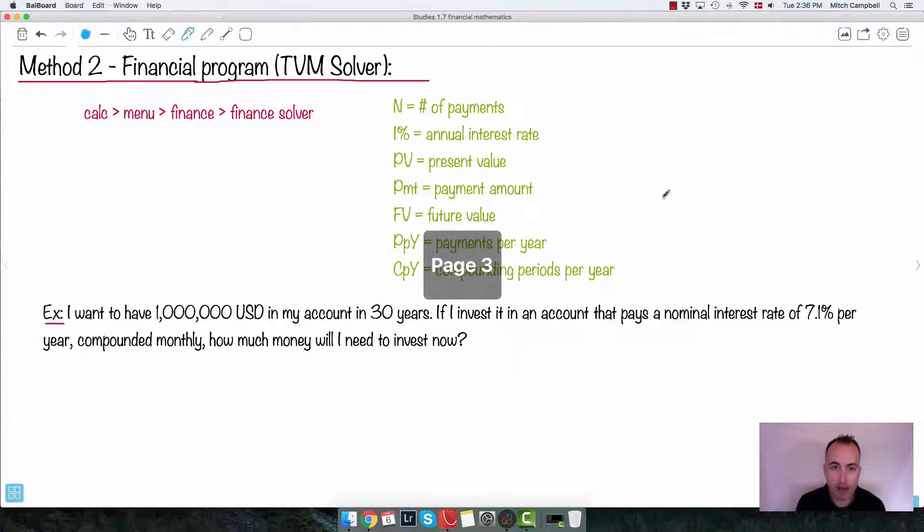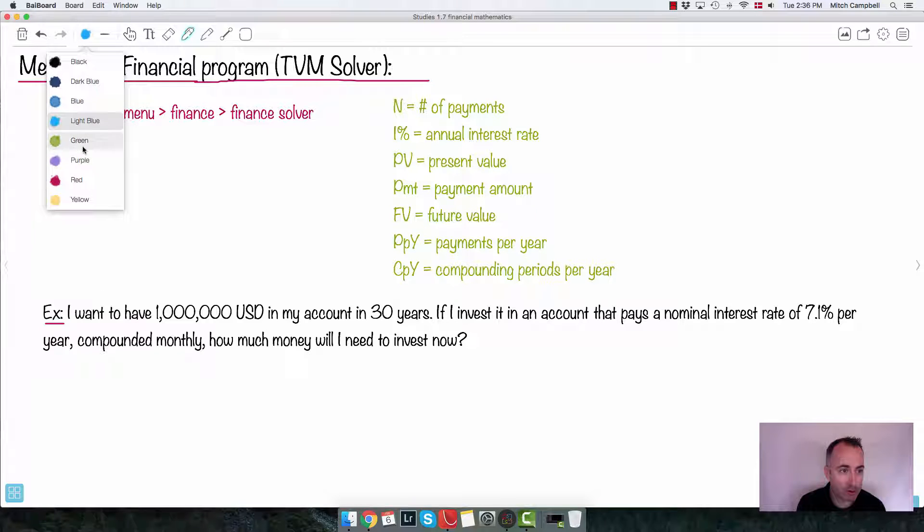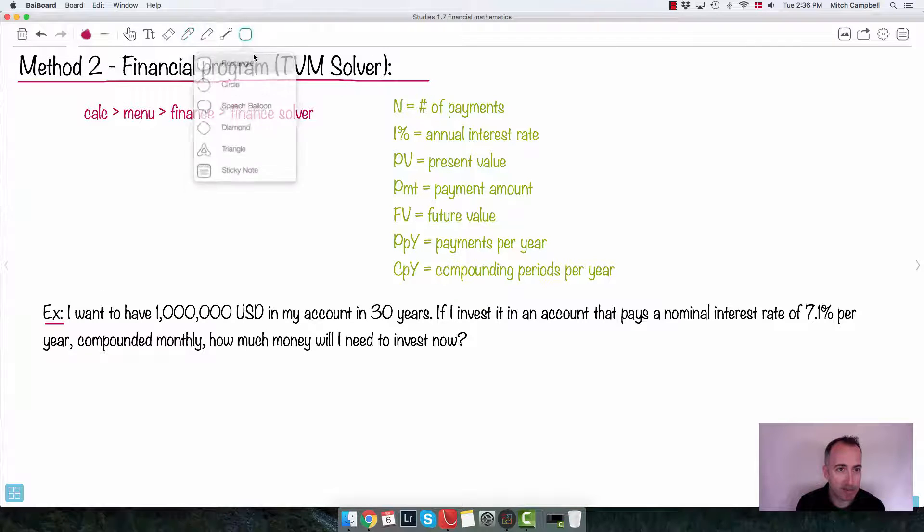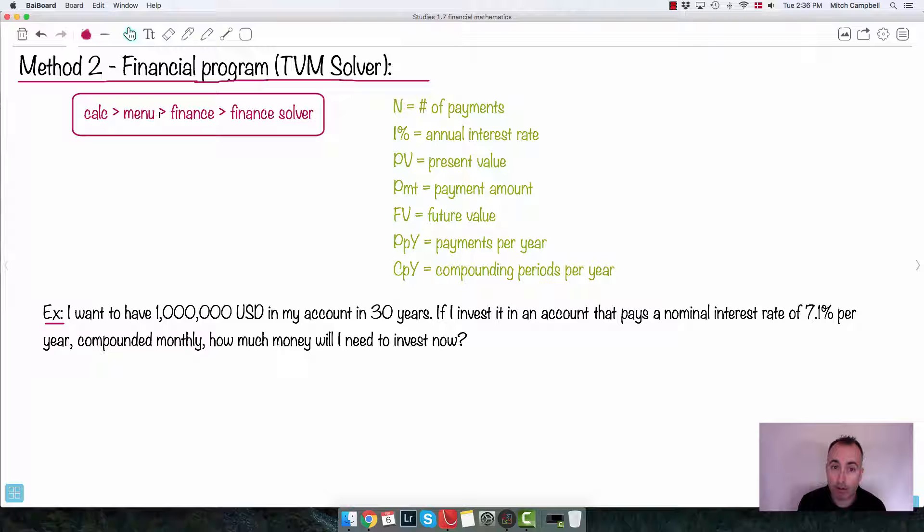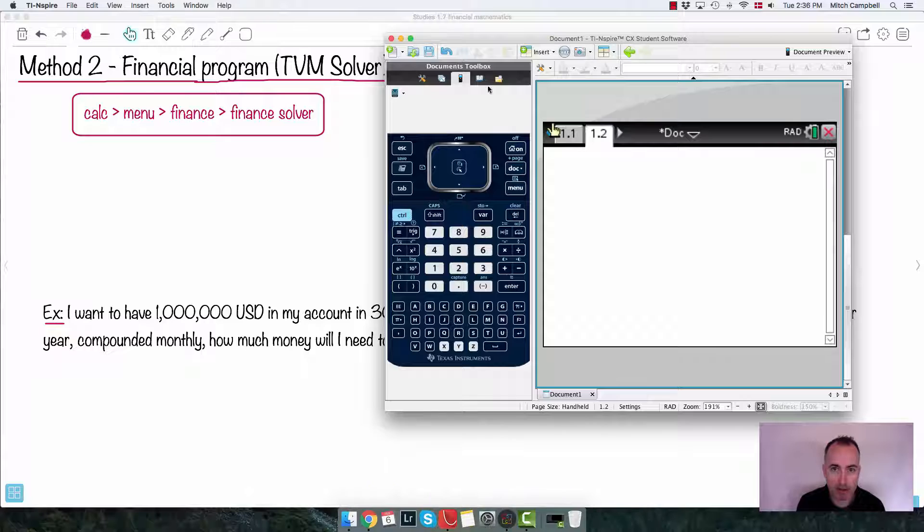Now you can also do this with your calculator. It has a really cool function in it. This one right here is your finance solver. So this is a little trick here. If you're using a TI-84, it's called the TVM solver. Check with your calculator what it's called. But we're gonna define this thing right here. Let's just take a look and see if we can do this here.